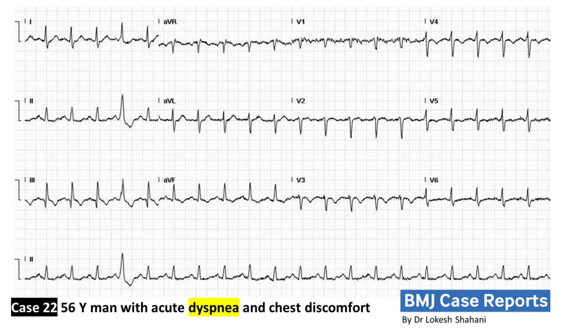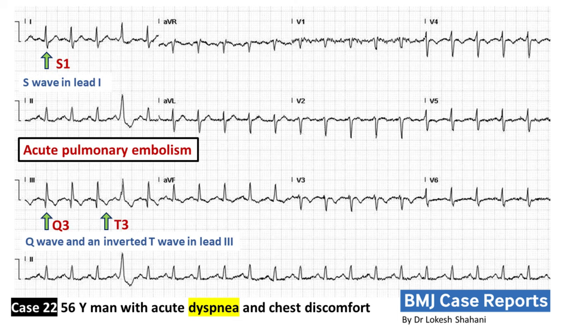Case 22: The patient is a 56-year-old man with acute dyspnea and chest discomfort. The ECG shows sinus tachycardia, an S-wave in lead 1, Q-wave and an inverted T-wave in lead 3. This phenomenon of S1Q3T3 is suggestive of acute pulmonary embolism.